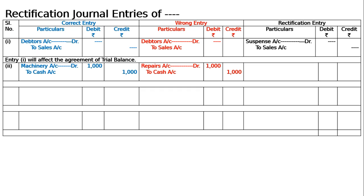Repairs will go. If there is a mistake in the debit and we credit this in the journal, then debit and credit will be cancelled. Hence machinery will come, repairs will go. Cash is correct. Repairs debit in the wrong entry and repairs credit in the rectification can be cancelled. The remaining part is machinery to cash. You have to nullify the wrong effect by giving a rectification entry such that if there is a cross match between wrong entry and rectification entry, the remaining will be machinery to cash, which is your correct entry.